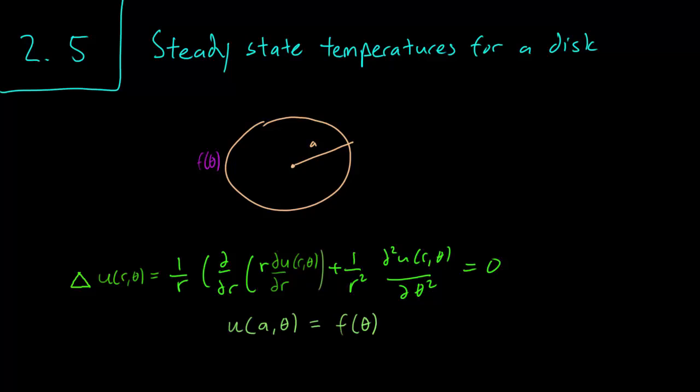And we have it written down as so. So this is going to be our Laplace equation, it is also set to zero. So we are considering a disk of radius a and we have a temperature on the boundary. The circumference of the disk has a temperature f theta and we want to figure out what the steady-state temperature is.